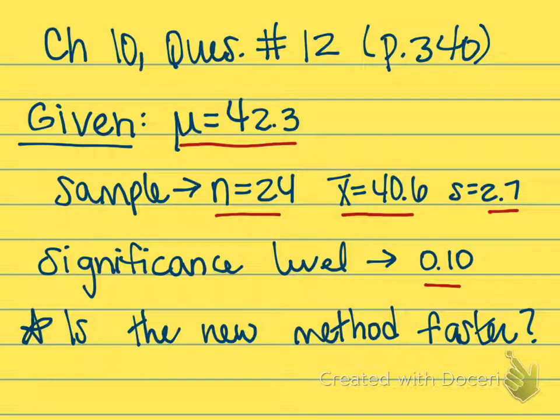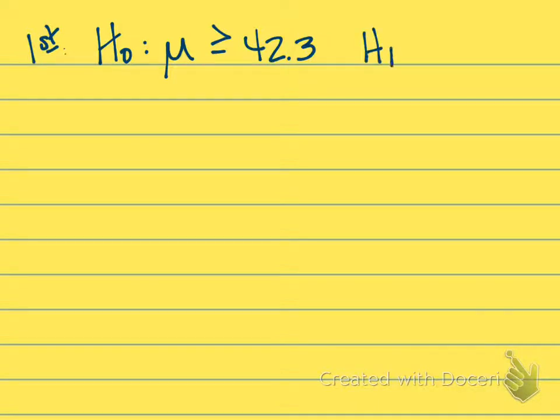Just like when we know our standard deviation, we follow that same process for hypothesis testing. First, we outline our null hypothesis and our alternate hypothesis. My null hypothesis is that the mean for the population is still going to be equal or perhaps even greater than that 42.3, the current mean time using the old method. My alternate hypothesis is that the population mean will actually be less than 42.3 minutes.